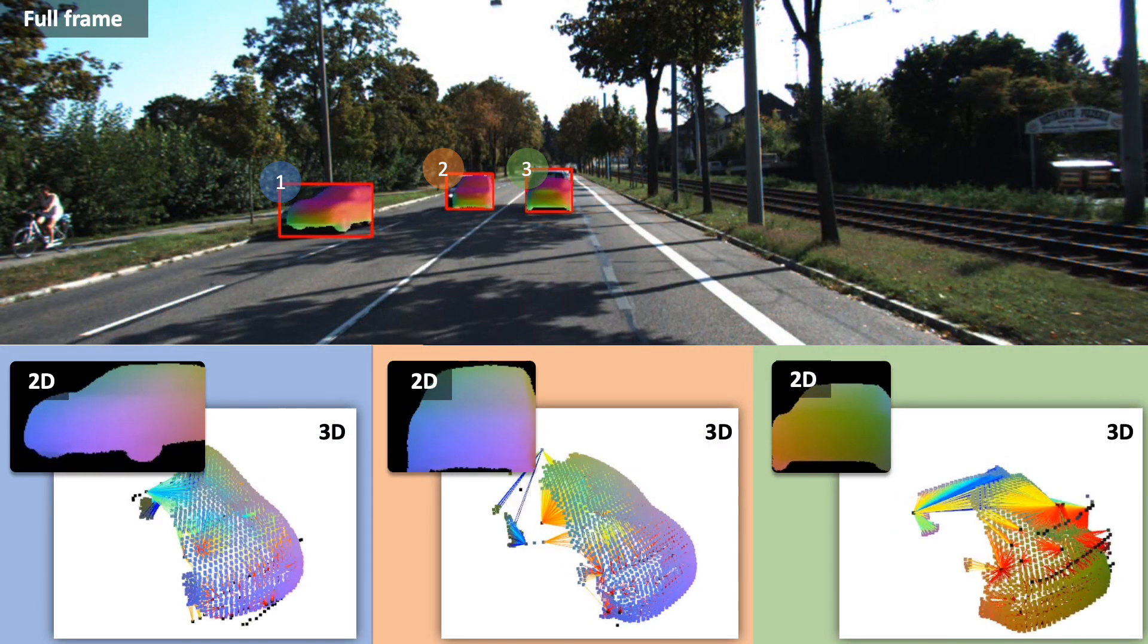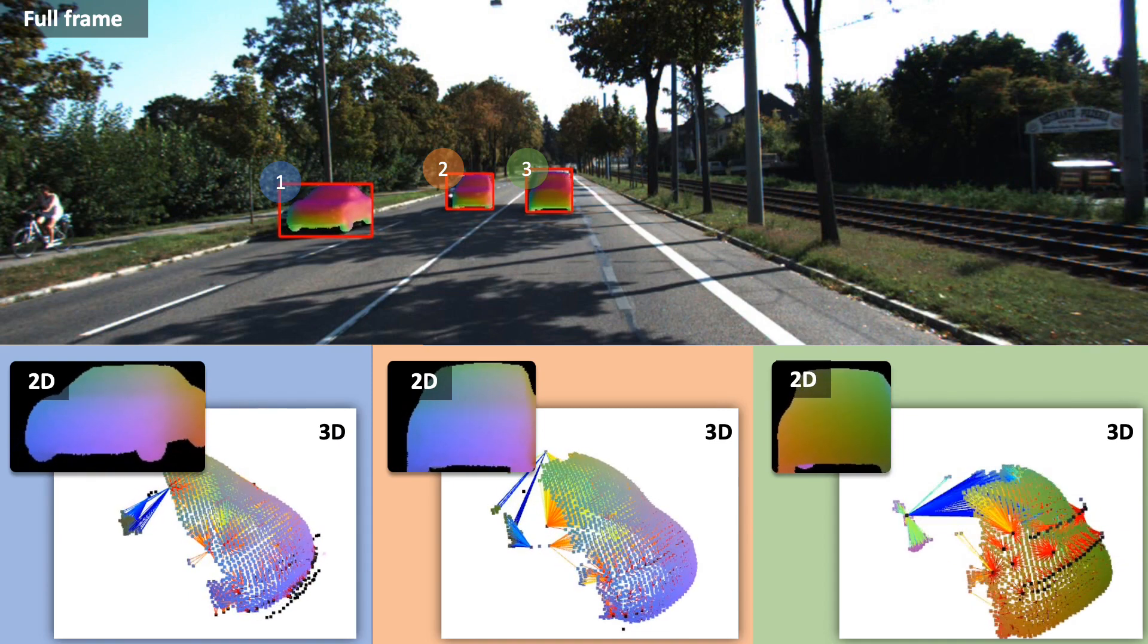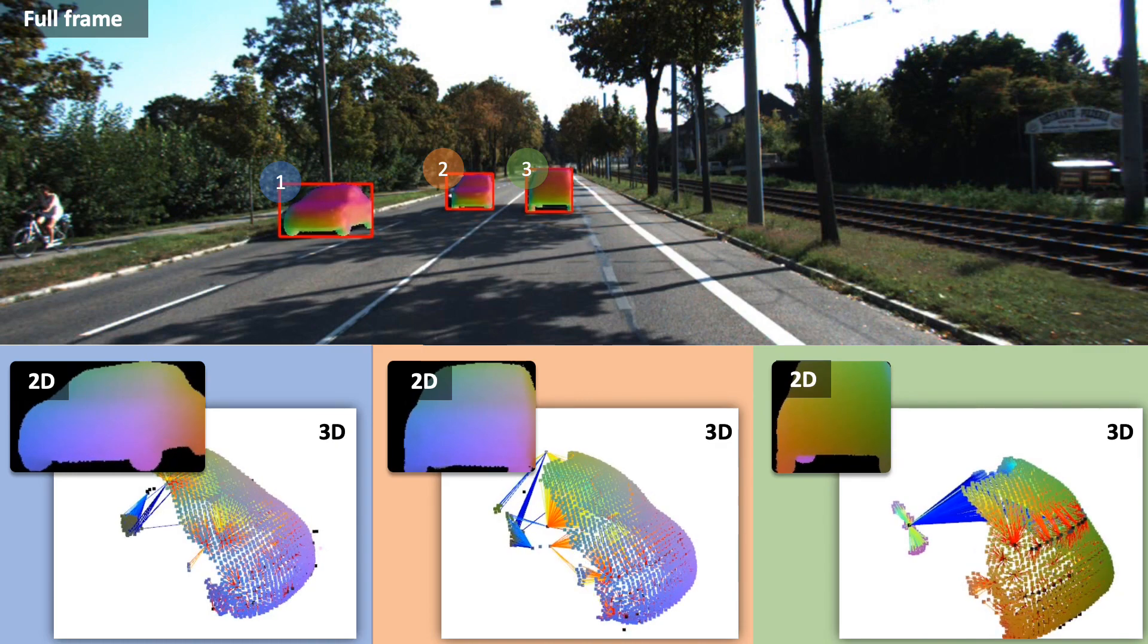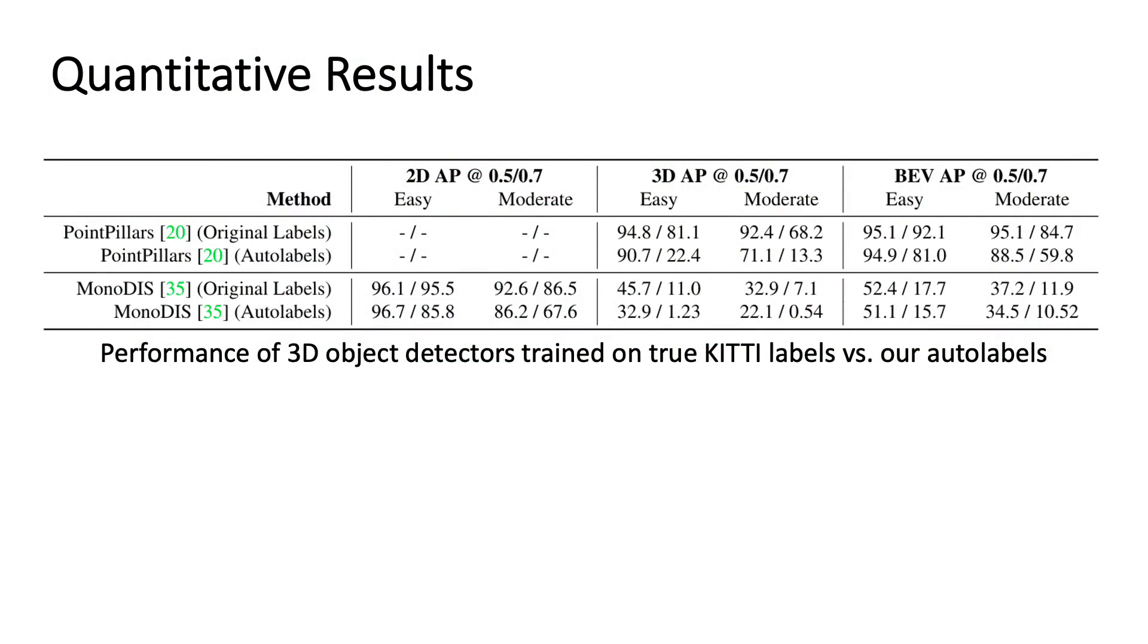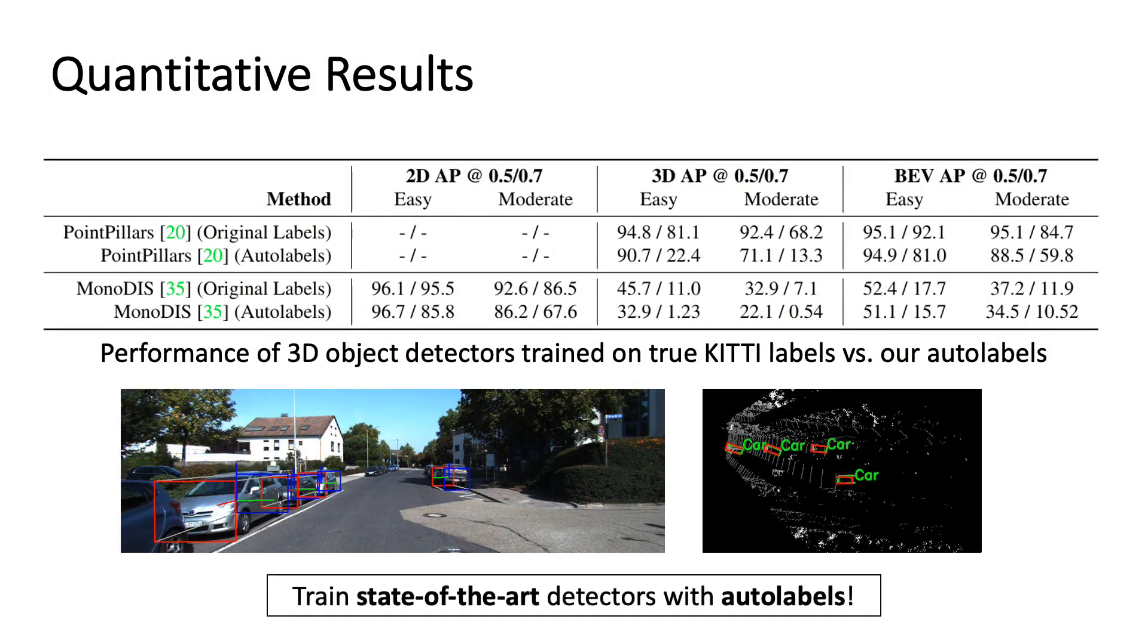Next, we show an example optimization procedure on a KITTI frame. We investigate the applicability of our auto labels to the task of 3D object detection and evaluate them for LiDAR and monocular-based detection. Remarkably, the detectors trained on our auto labels alone achieve results comparable to the current state-of-the-art.